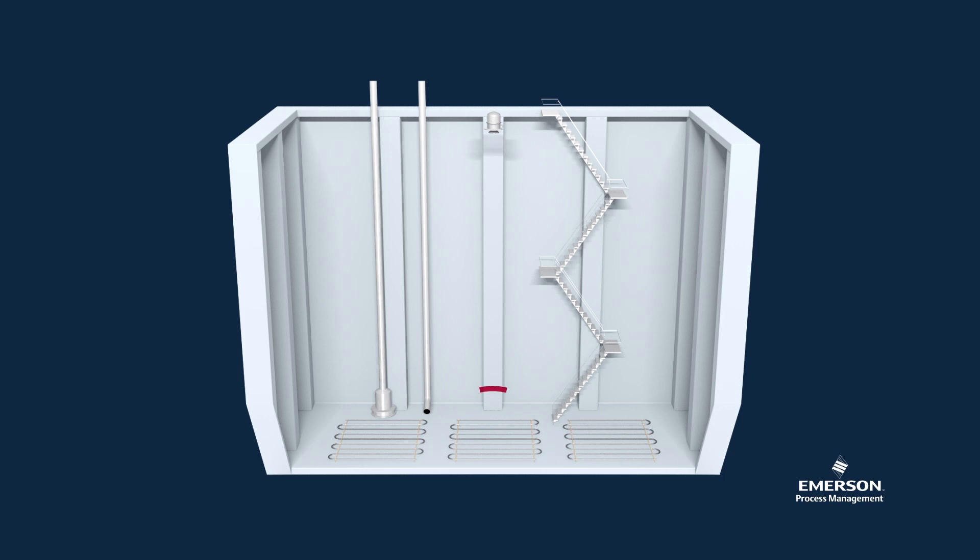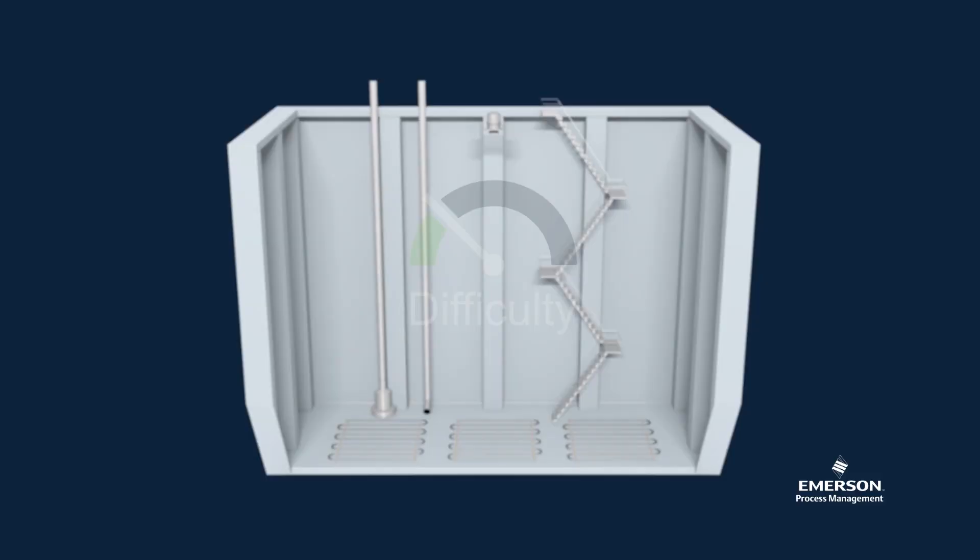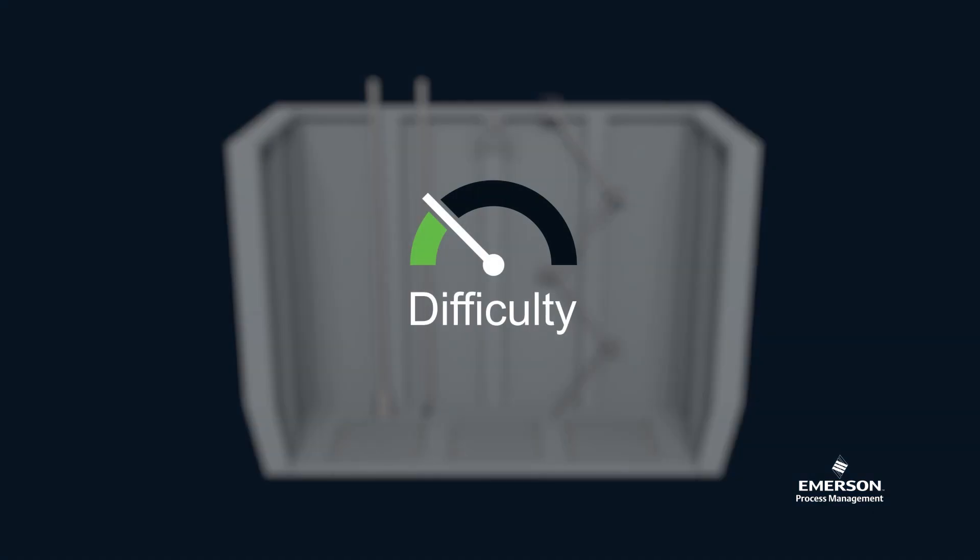In an empty tank, there is only one echo, and that is the flat tank bottom. This is a strong echo, and it is simple to measure against. Therefore, the green color on the difficulty meter.